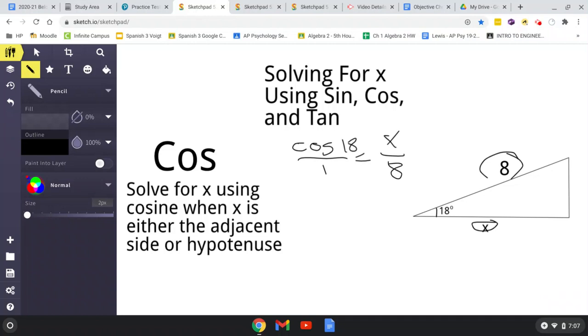And now, we just solve for x. So, we have to get 8 out of the denominator. So, multiply by 8, multiply by 8. So, x equals 8 times cosine of 18. Now, on your calculator, before you do this, make sure your calculator is in degrees mode. If it's in radians, you won't get the correct answer.